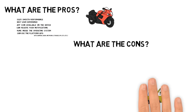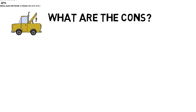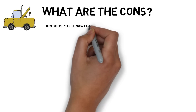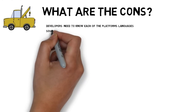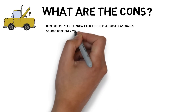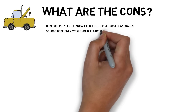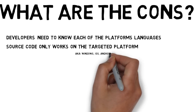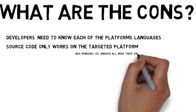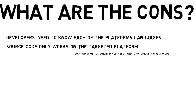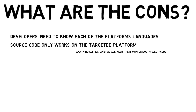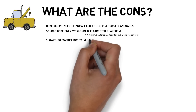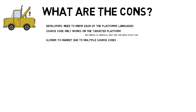What are the cons of a native app? Developers need to know each of the platform's languages. The source code only works on the targeted platform — Windows, iOS, Android — so they'll all need their own unique project code. It's slower to market due to the multiple source codes.